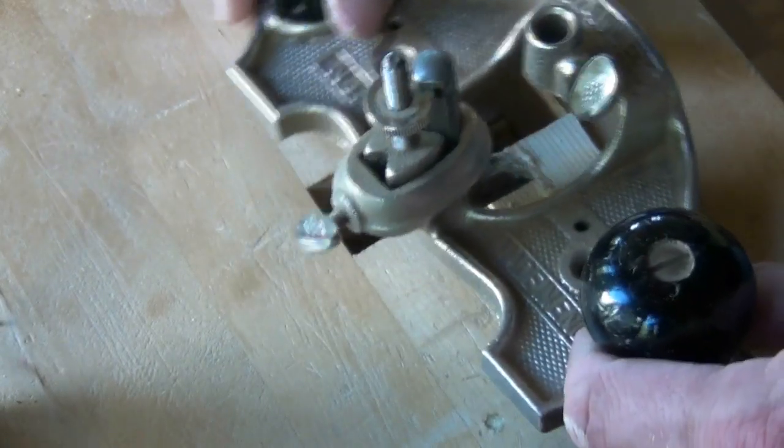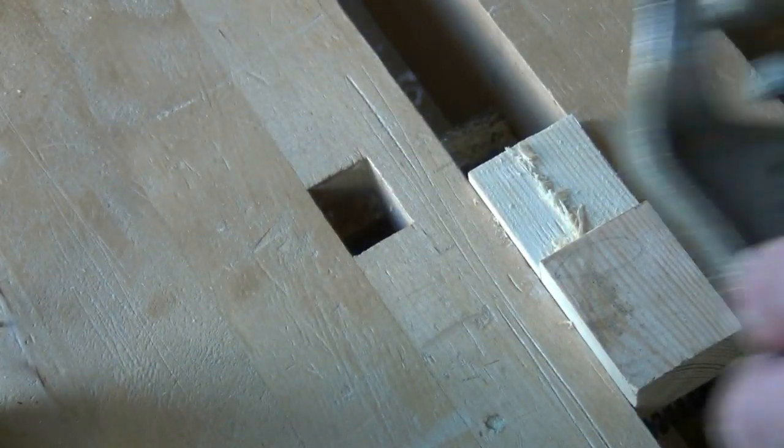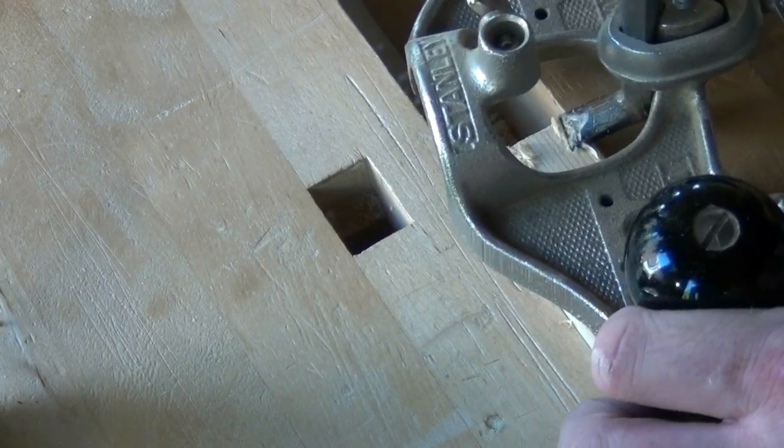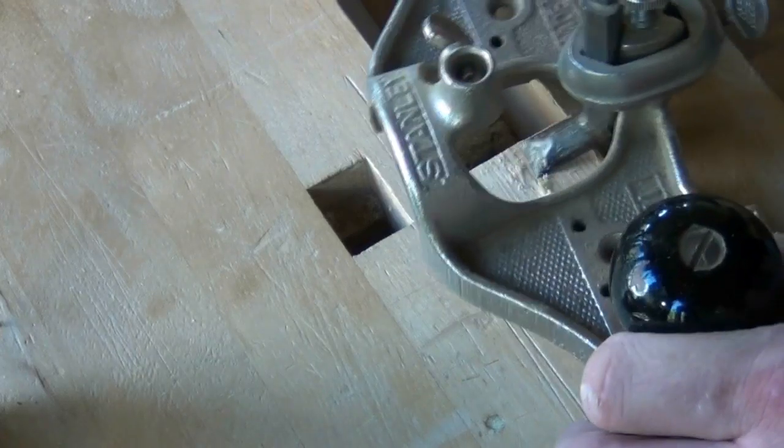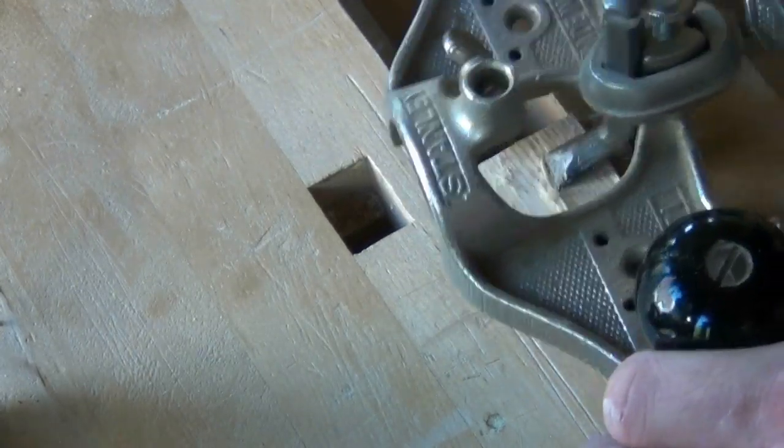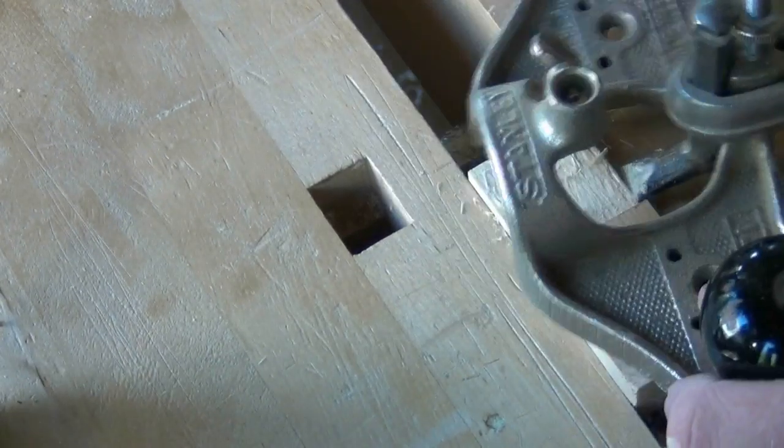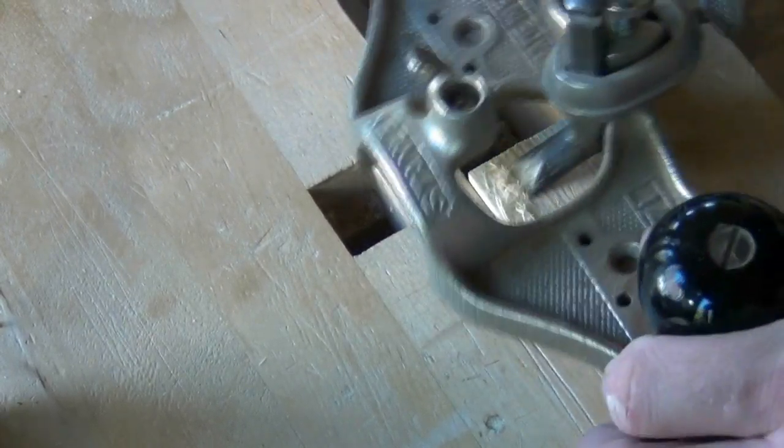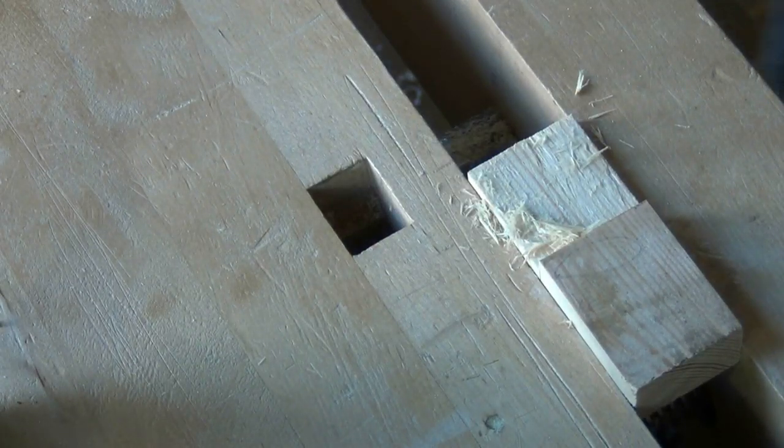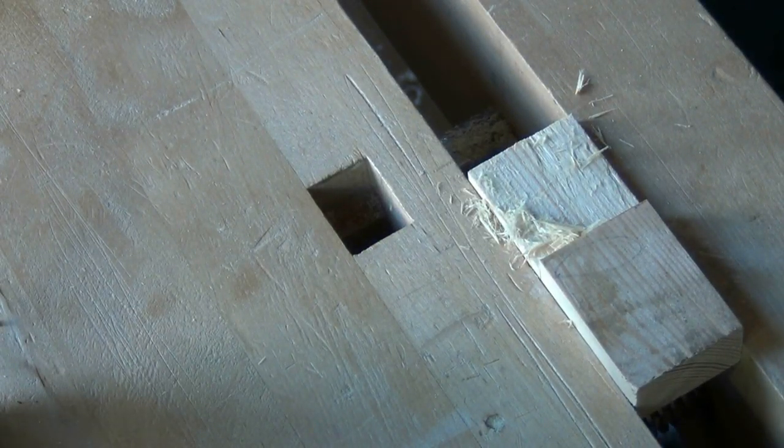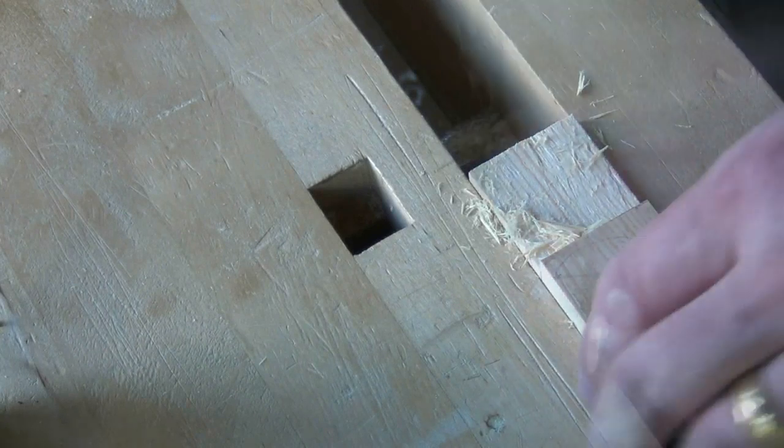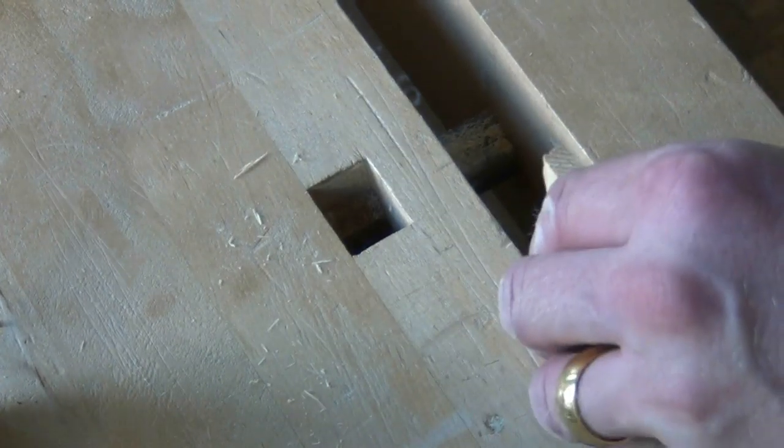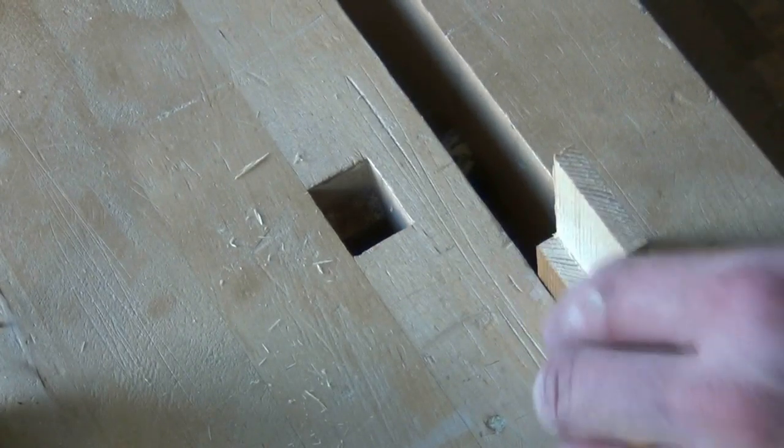Now I just use a router plane very quickly to bring the tenon cheeks down to the scribed line. You can attempt to saw precisely to the line if you like, but if you've got a router plane it's very quick to finish it off this way, and you don't risk sawing too much off.